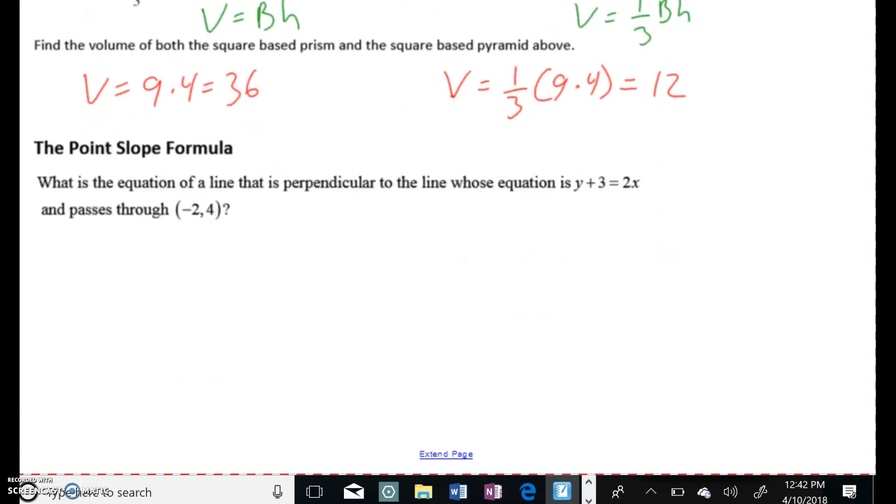Last thing, point-slope formula. Very common equation. It's really a connection of Algebra 1 and Algebra 2. The point-slope formula, you have to have memorized. Y minus Y₁ equals M parentheses X minus X₁. Very important formula you need to have memorized. Not given to you on your reference sheet. So we want the equation of a line. Anytime you want the equation of a line, you're going to do this.